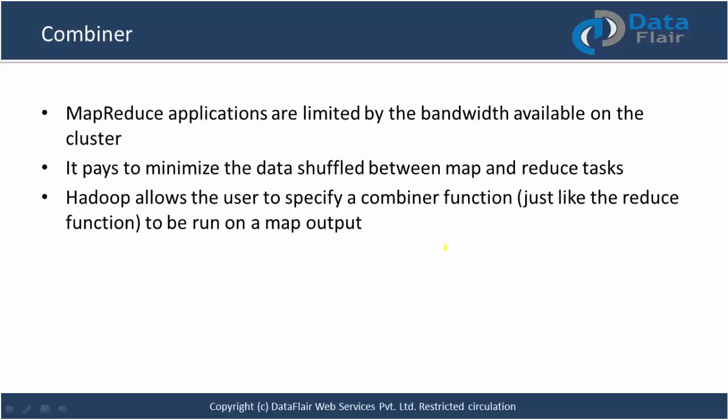So guys, the solution is the combiner. What does combiner do? Combiner helps to minimise the data shuffled between map and reduce tasks. Suppose without combiner, the data travelling from mapper to reducer is 10 GB. With combiner, it will be reduced - say to around 6 GB. From 10 to 6, that's really appreciable.